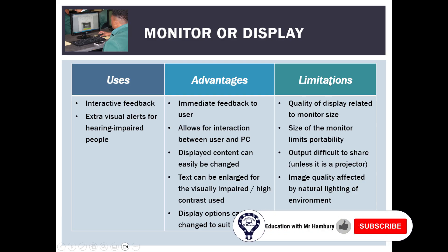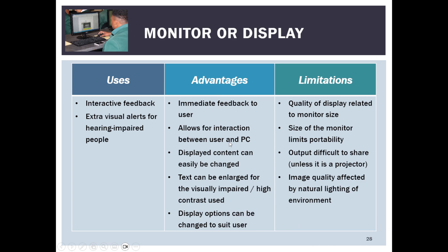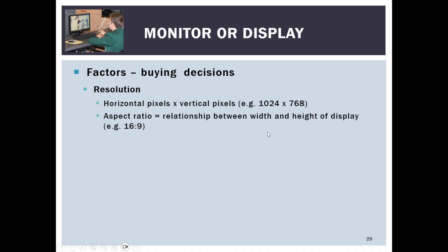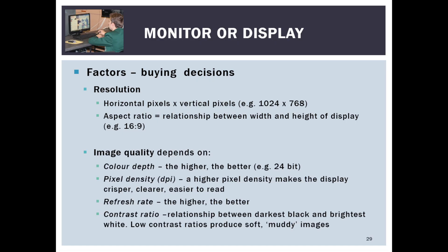We know what a monitor does — the advantages and limitations we covered in grade 10 and 11. When buying a monitor, the factors to consider include resolution, aspect ratio (widescreen or four-by-three), color depth, pixel density, refresh rate, and contrast ratio. You need to ask what you're going to be doing with the device. For gamers, refresh rate, contrast ratio, and resolution become extremely important.